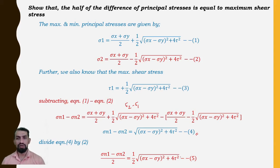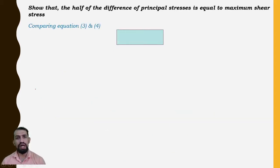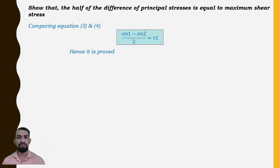Now comparing equations 3 and 5, we can see that (σn1 − σn2)/2 = τ_max. Hence it is proved that half of the difference of the principal stresses is equal to the maximum shear stress.